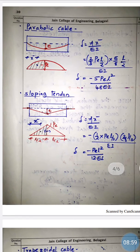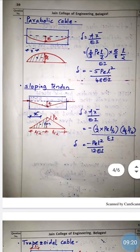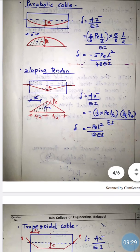For a sloping tendon, the bending moment diagram is triangular. Using δ = A·x̄ / EI, the area of the triangle is (1/2) · Pe · (L/2). The centroid distance from the base end is (2/3) · (L/2). After calculation, the deflection is δ = −PeL² / 12EI. Again, the negative sign indicates upward deflection due to the prestressing force.